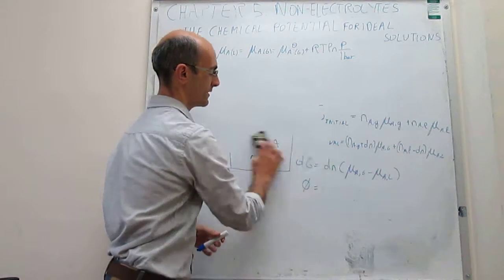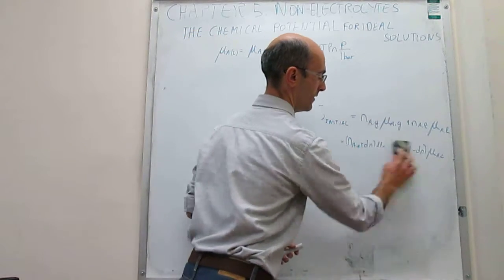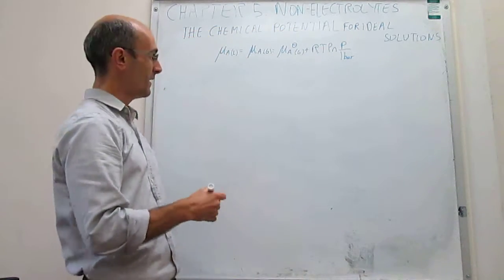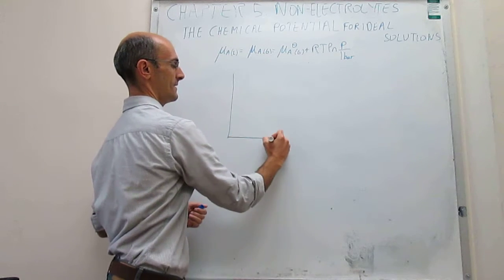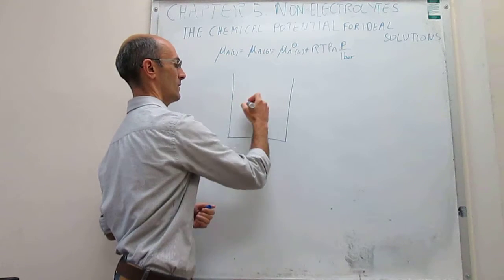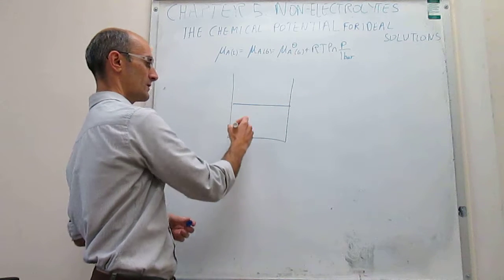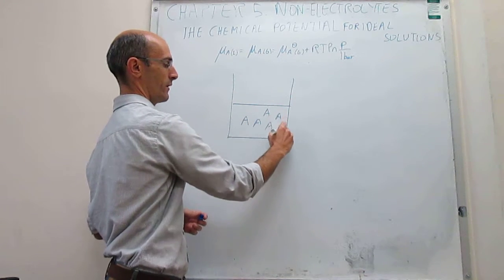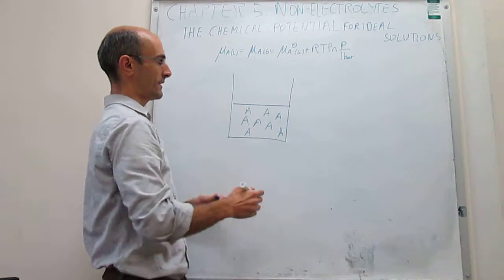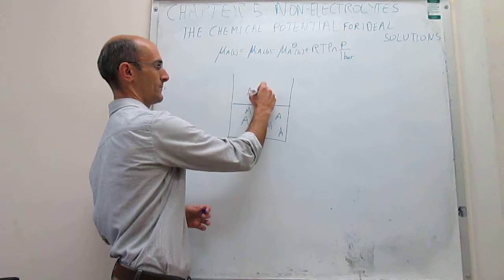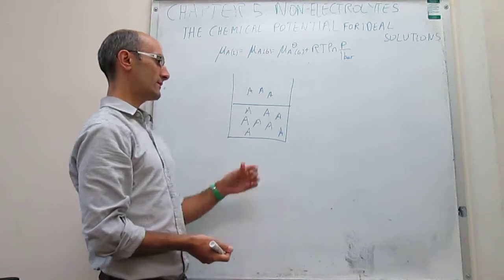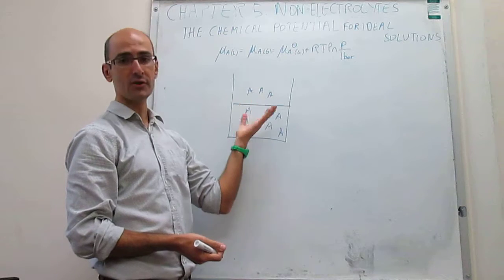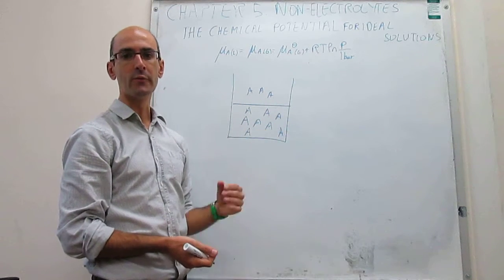This is actually going to be made possible by something we call Raoult's Law. Raoult was a scientist who tried to do the following measurements: he had a solution of A — this could be water, ethanol, toluene, or benzene — any liquid that has a measurable vapor pressure. At some conditions of temperature, there will be a partial pressure, which is what we call the vapor pressure, at equilibrium.